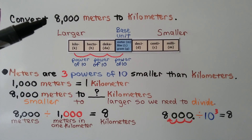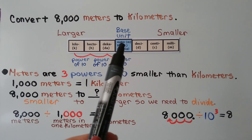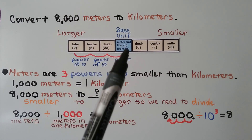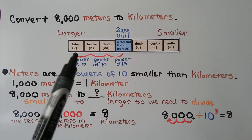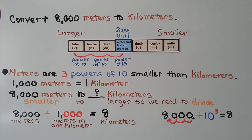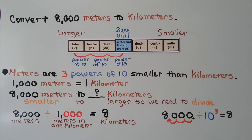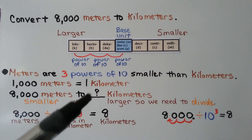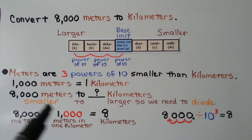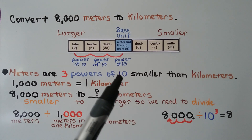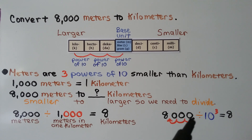We need to convert 8,000 meters to kilometers. Meter is the base unit, and kilo is way over here — so we're going from this box to this box: one power of 10, two powers of 10, three powers of 10. Meters are three powers of 10 smaller than kilometers. 1,000 meters equals one kilometer. So we're going from smaller to larger, which means we need to divide. 8,000 meters divided by 1,000 equals 8 kilometers. We're doing 8,000 divided by 10 to the third power — three powers — so we move the decimal three hops.